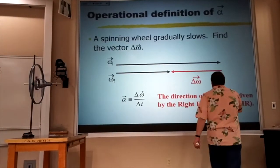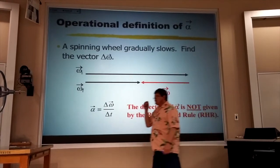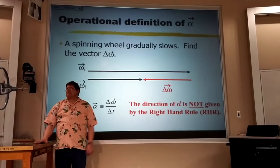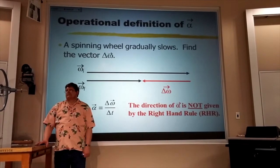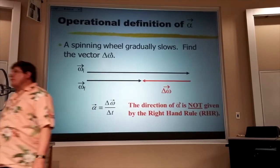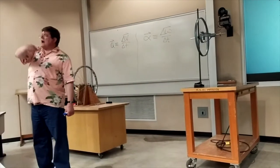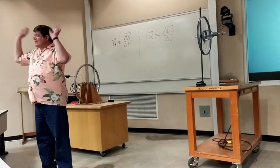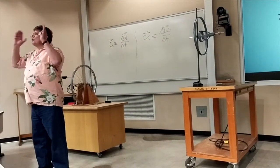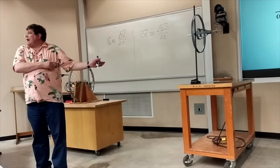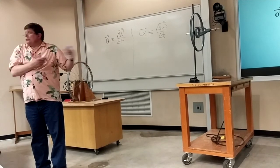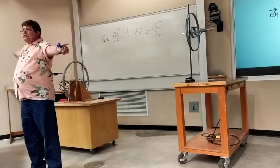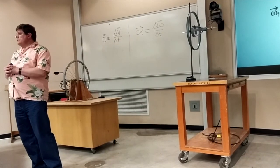Now, I want to caution you: the right-hand rule gives you the direction of the omega vector. Period. Full stop. Nothing else. Some people learn that right-hand rule and want to use it for everything on the final exam — omega's out of the page by right-hand rule, alpha's into the page by right-hand rule, it's Tuesday by right-hand rule. Right-hand rule only gives you omega. How do you get alpha? You ask yourself if it's spinning faster and faster or slower and slower. If it's faster and faster, alpha is the same direction as omega. Slower and slower, it's opposite. There is no right-hand rule for alpha.